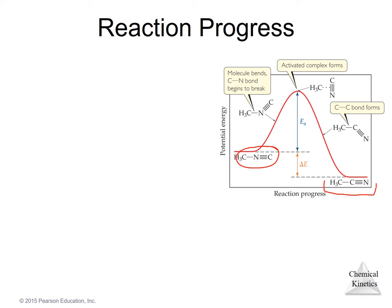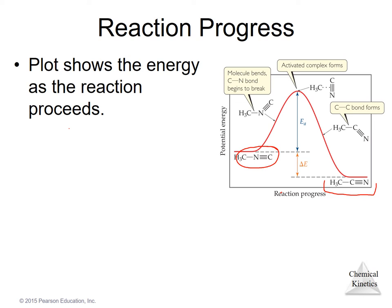As the reaction takes place for the reactants to go from the reactant to the product, basically that CN group has to turn around. Initially, it takes energy to do that. So as the bond bends here, the energy is going up as the reaction proceeds.